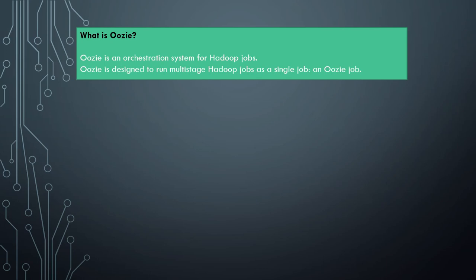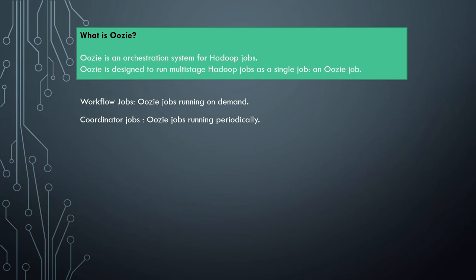There are a few key terms you should know before starting with Oozie. First, workflow jobs: workflows contain the order and flow of all the jobs to be scheduled in one Oozie job, and workflow jobs are run on demand. Then comes coordinator jobs — Oozie jobs that run periodically, for example every day at 12 AM or every day at 2 PM. Then comes bundle jobs, which are a collection of multiple coordinator jobs managed as a single job — one bundle job might run more than one coordinator job.